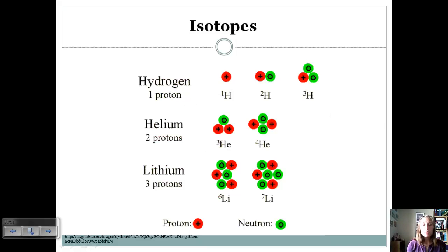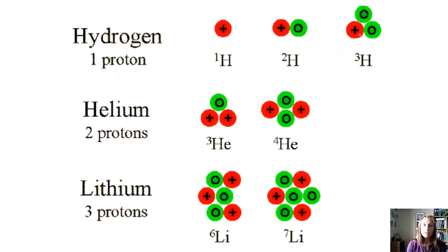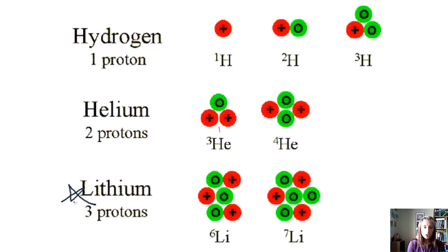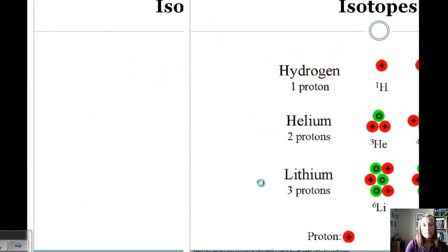Here are a couple more examples. The protons are red and neutrons are green. We have 3 isotopes of hydrogen with the same number of protons but different numbers of neutrons. The same is true for these 2 isotopes of helium and these 2 isotopes of lithium — same number of protons to identify the element, but different numbers of neutrons.